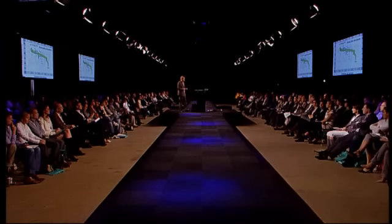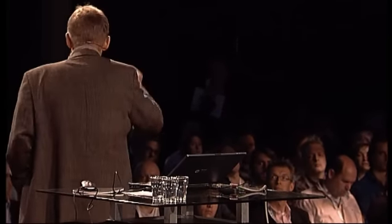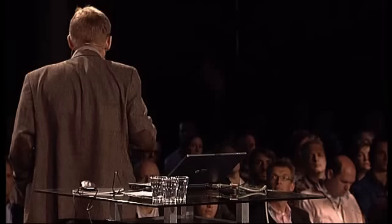This is what the Swedish media elite thinks. I ran the same exercise for them — it was the first prototype of a game where we let the media elite in Stockholm guess where Iran was. These dots are the guesses of where Iran was in number of children per woman and life expectancy. Iran may have a leader that many of us don't like, but the people of Iran are highly trained and have changed tremendously. The media elite in Sweden are more or less 25 to 30 years behind reality. In fact, Swedish students have the view of the world that corresponds to reality the year their teachers were born.